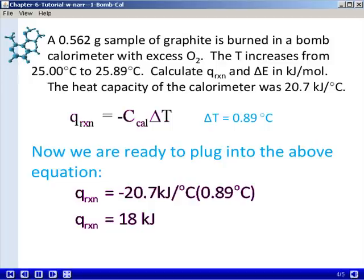Now we're ready to plug into the above equation: Q_reaction equals negative C_cal times ΔT. We were given the heat capacity for the calorimeter is negative 20.7 kilojoules per degree Celsius. We'll multiply that times the ΔT that we just calculated of 0.89 degrees Celsius to get Q for the reaction of 18 kilojoules.